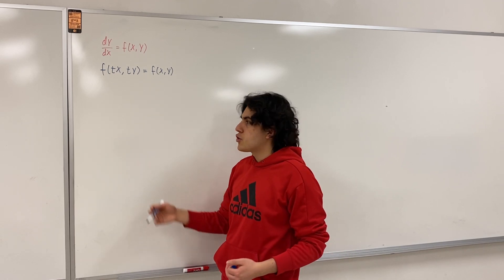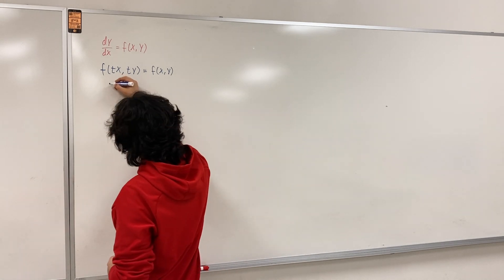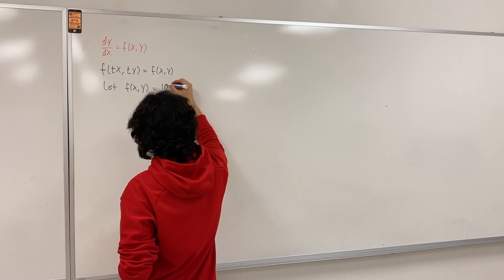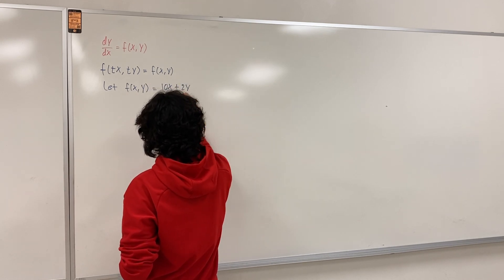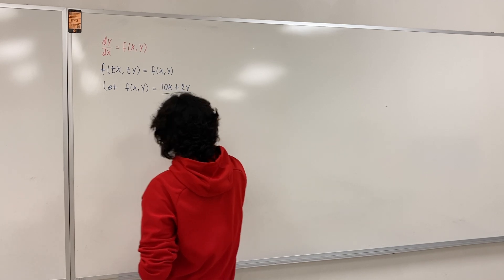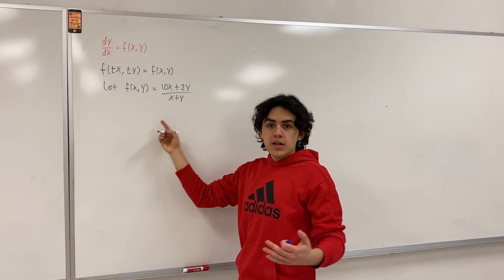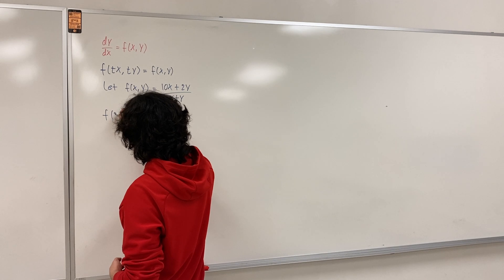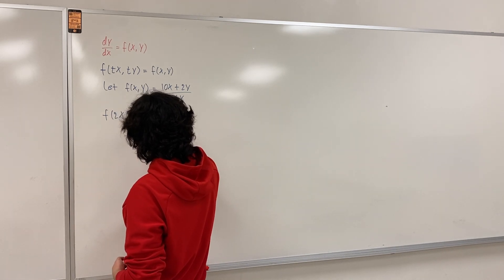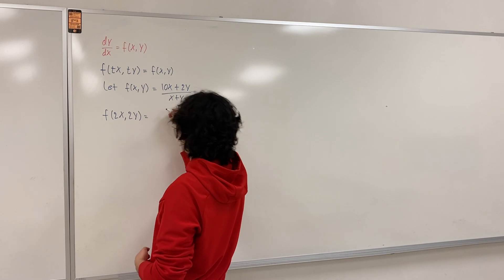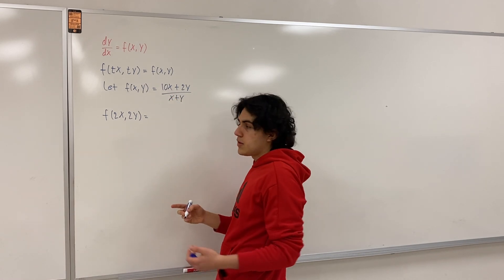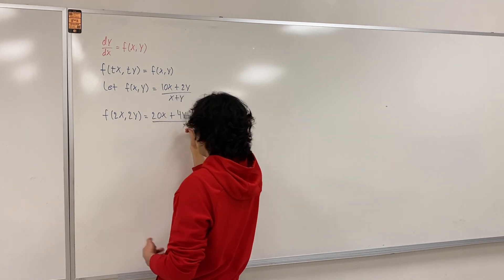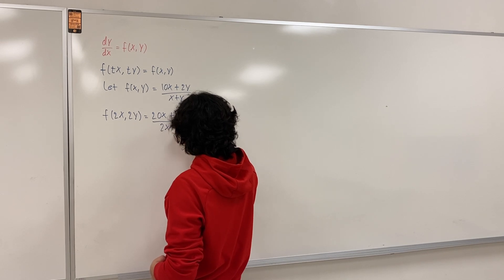Let me show you an example of an expression that satisfies this. Let's say f of x, y is equal to 10x plus 2y divided by x plus y. Let's check if this condition is satisfied. If we multiply by t equals 2, so we do f of 2x, 2y — well, if we multiply all the x's and all the y's by 2, we're going to get 20x plus 4y divided by 2x plus 2y.